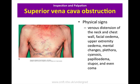Superior vena cava obstruction is usually the result of direct obstruction of the superior vena cava by malignancy, most commonly lung cancer. The obstruction results in a raised and non-pulsatile JVP with absent hepatojugular reflux and dilated veins over the neck and chest wall. Other causes include lymphoma, thymoma and mediastinal fibrosis.